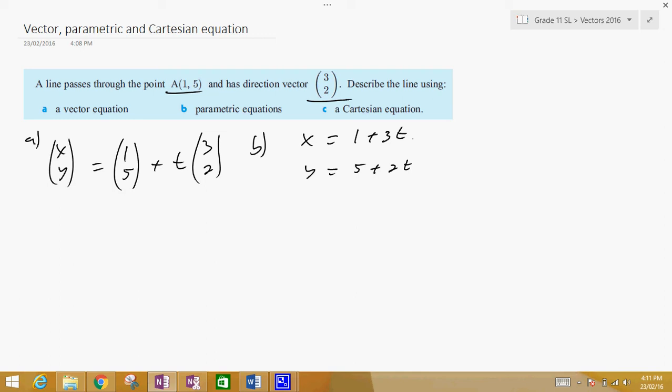Next, we got the Cartesian equation. Well, the Cartesian equation occurs when you take this equation and this equation and you transform it into t equals something, and then make the two t's equal to each other.